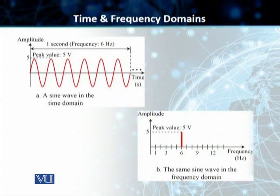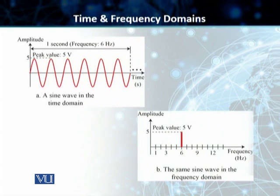At the same time, it actually conveys all the information that one can find in a time domain plot. The advantage of this frequency domain plot is that we can immediately see that spike, note the frequency — in this case 6 hertz — and find out the peak amplitude. Instead of drawing multiple periods and cycles of a complete sine wave, all that we have to draw is one single spike that shows both the frequency and the amplitude.